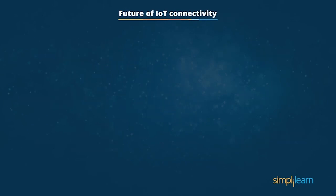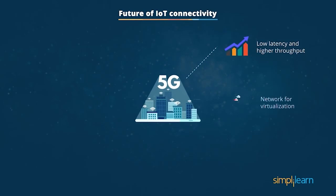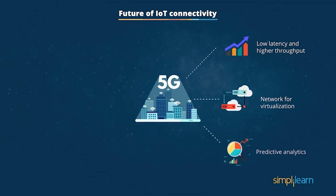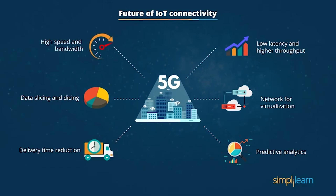IoT connectivity is the future with the launch of new technologies like 5G. With low latency and higher throughput, 5G will increase the penetration of IoT. 5G cellular technology is supported by network virtualization. Even for common use cases, real-time predictive analytics can be available, reducing delivery time. 5G and IoT are embedded technologies — both can be used for predictive analytics and real-time business decisions, with 5G helping devices connect through a network with high-speed bandwidth.